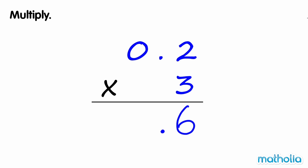Now multiply the ones. 3 times 0 ones equals 0. So 0.2 times 3 equals 0.6.